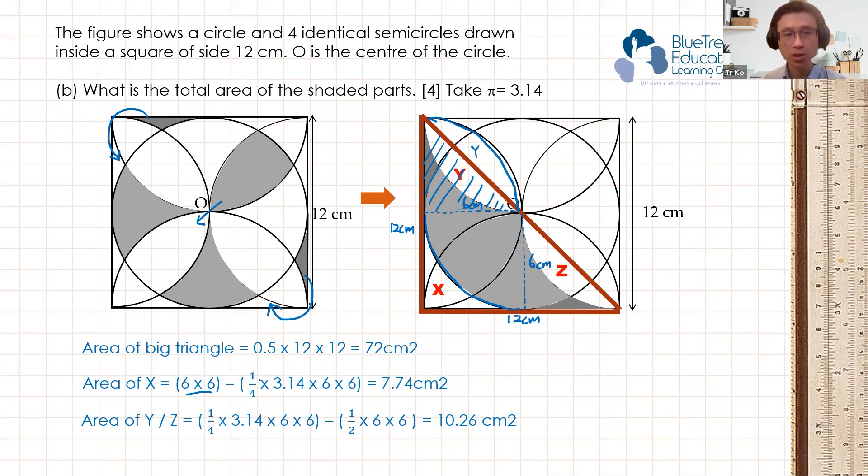So area of the quadrant is 1 quarter times pi times r times r, 1 quarter times 3.14 times 6 times 6, take away area of the triangle. Area of the triangle is 1 half times 6 times 6, half times base times height. The base of this triangle is 6 centimeters and the height is 6 centimeters as well. So we get 10.26 square centimeter. And since Y and Z are the same area.